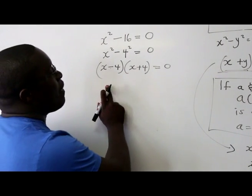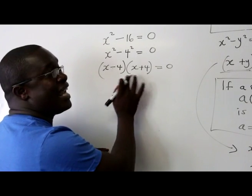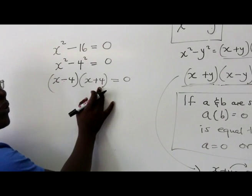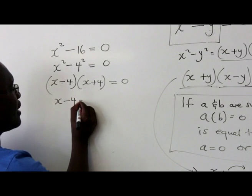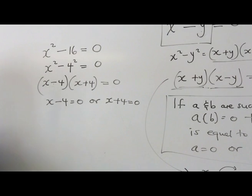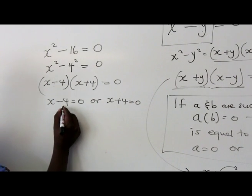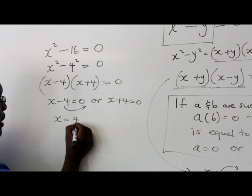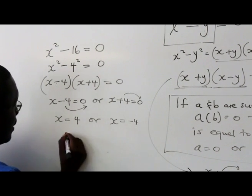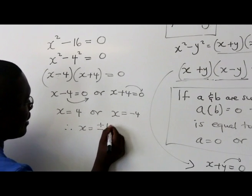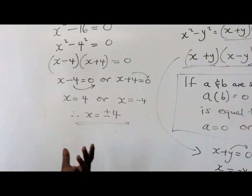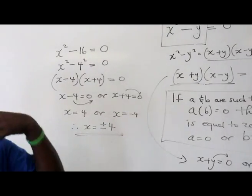So in this case now, because of our rule, we know that if two things are multiplying each other and the product is zero, then one of them is zero. But we don't know which one. So we're going to say x - 4 = 0 or x + 4 = 0. Taking 4 to that side, x = 4 or x = -4. Therefore, x = ±4. So you have solved this quadratic equation using difference of two squares.